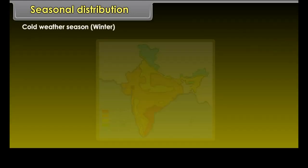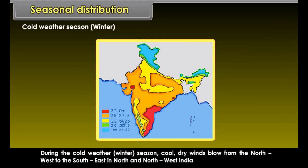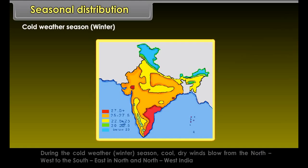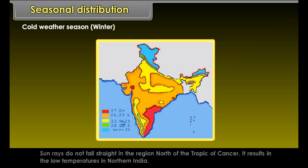During the cold weather winter season, cold dry winds blow from the northwest to the southeast in north and northwest India, and from northeast to southwest in south India. Sun rays do not fall straight in the region north of the Tropic of Cancer, resulting in low temperatures in northern India.